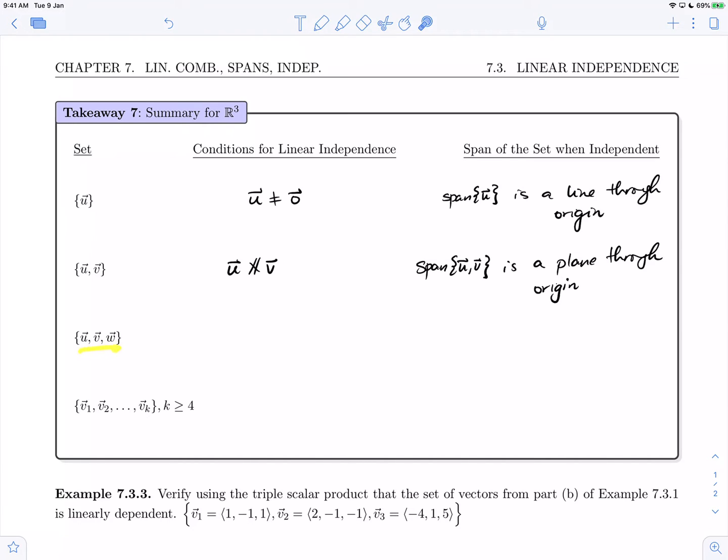If we have three vectors u, v, and w, that set will be linearly independent if u, v, and w are non-coplanar. In other words, if u dotted with v cross w is not zero.